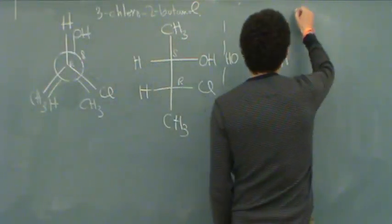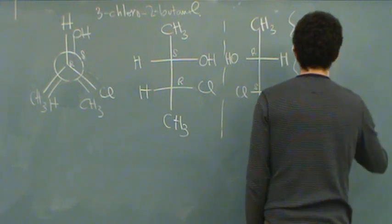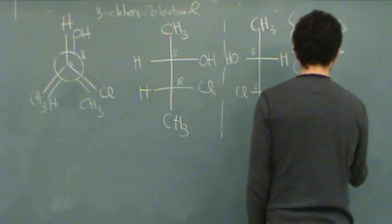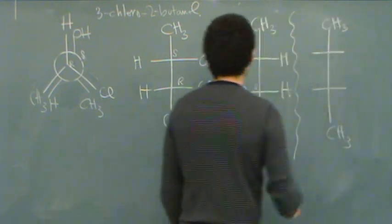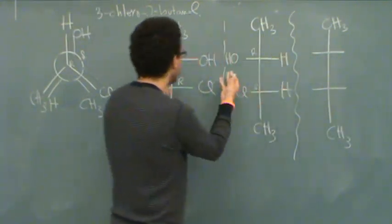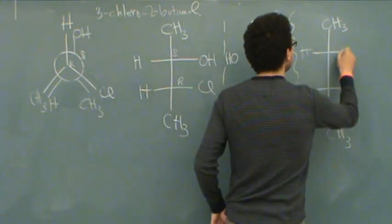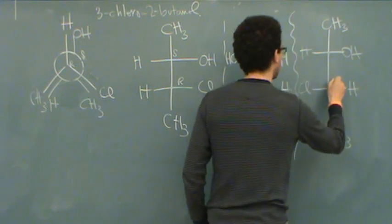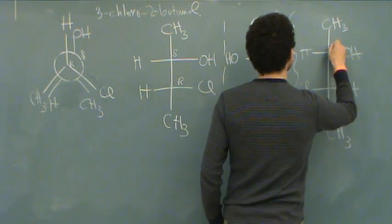Okay, to draw the diastereomer of this, and there would be two possible ones, I'm just going to draw one of them. I'm just going to recopy the picture. Whichever one you prefer, we'll start with the original one. Keeping one of the configurations the same, and then switching the second one, which would make this S and this S.